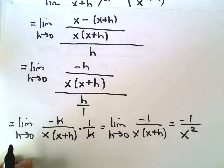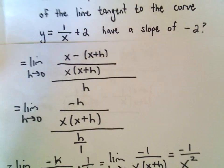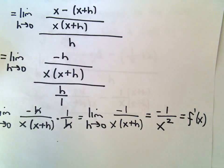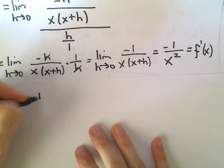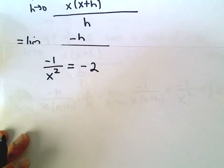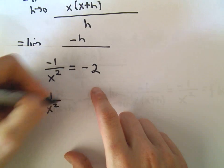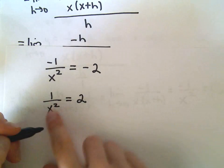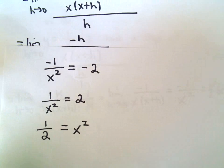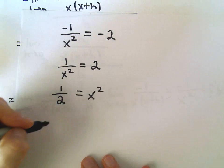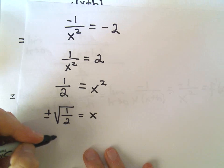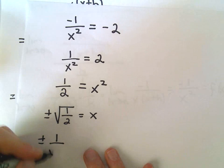We want to figure out where on the original graph the slope of the tangent line equals negative 2. We now have a formula for the derivative, so we set negative 1 over x squared equal to negative 2. Multiplying both sides by negative 1 gives 1 over x squared equals 2. Moving x squared over and dividing by 2, then taking the square root of both sides, we get x equals positive or negative square root of 1 over 2, which we can write as positive or negative 1 over the square root of 2.